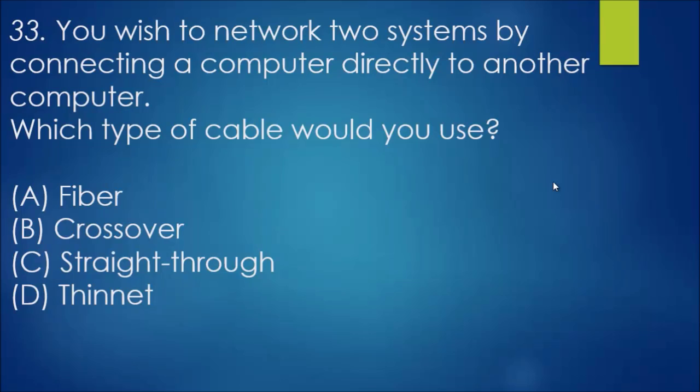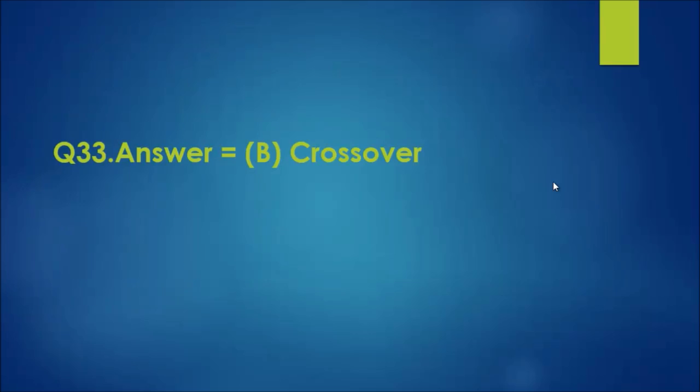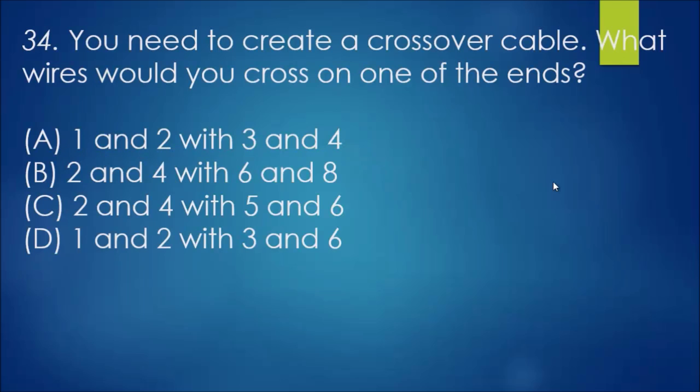Question 33: You wish to network two systems by connecting a computer directly to another computer. Which type of cable would you use? Straight-through is different, so you have a computer, laptop device, whatever, connecting to a switch or router, that's different, so it's straight-through. For the same, we go for B, crossover. So if they're the same, they're basically connected by a crossover cable for them to communicate.